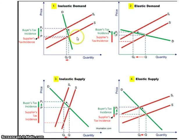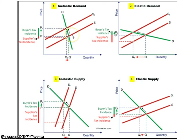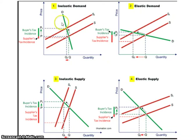In this first graph, you have more of an inelastic demand curve — it is more vertical than it is horizontal. When you think about the determinants, you have a more inelastic curve mostly because of necessities or lack of time. It could be something that doesn't take up a high portion of the consumer's income, or there aren't a lot of substitutes available, which is why you have a more inelastic demand curve.